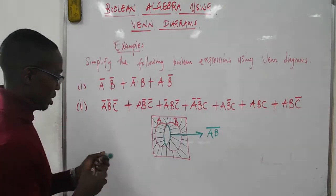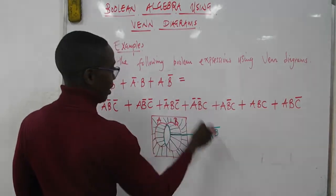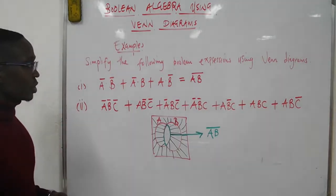Therefore, simplifying this expression using Venn diagrams gives us (AB)̅, which is the set outside AB.